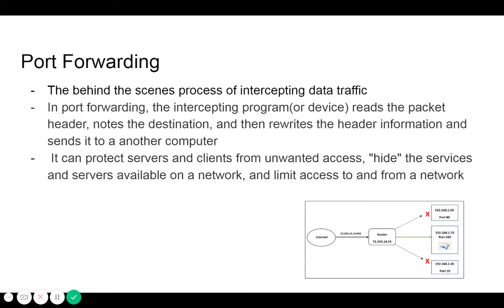Some intermediate devices include a router, proxy server, or a firewall. In port forwarding, the intercepting program reads the packet header, notes the destination, and then rewrites the header information and sends it to another computer — different from the one originally intended. The other destination could be a different IP using the same port, a different port with the same IP, or a completely different combination of the two.